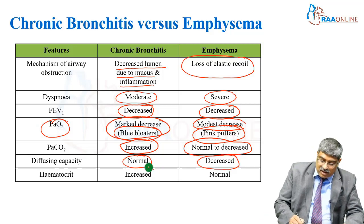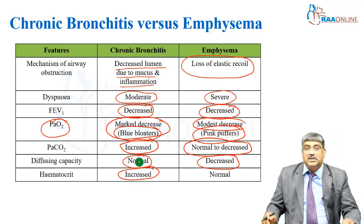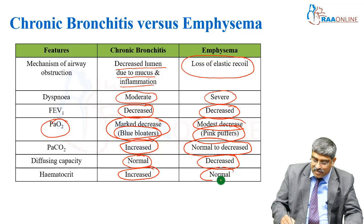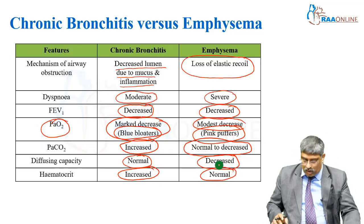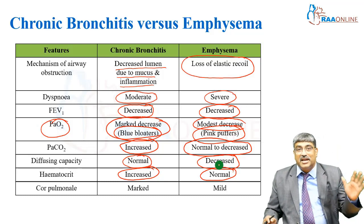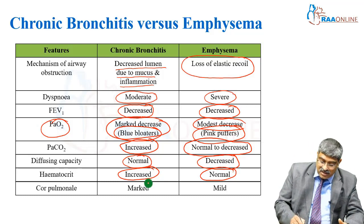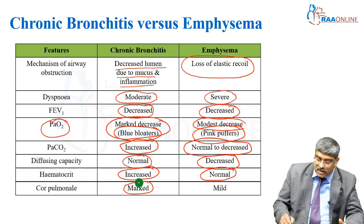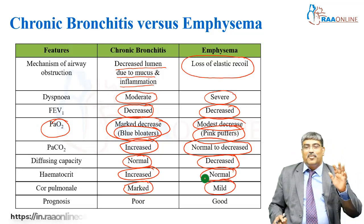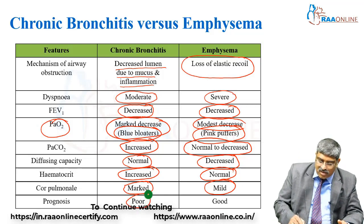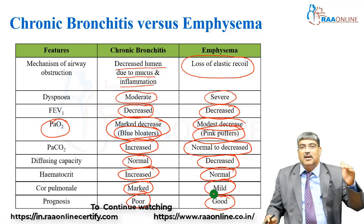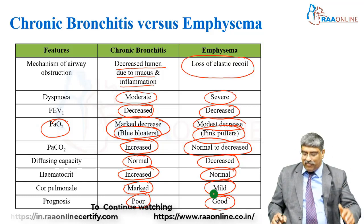Hematocrit: in chronic bronchitis, because of hypoxia, the patient might be polycythemic, but in emphysema it may be normal. Coming to cor pulmonale, which is right heart failure secondary to lung disease, it is marked in chronic bronchitis and mild in emphysema. Prognosis is poor for chronic bronchitis, whereas for emphysema it is better.